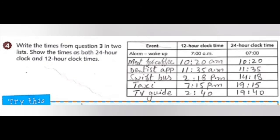Question number 4. In this exercise, we have three columns: one for event, one for 12-hour clock time, and one for 24-hour clock time. We will write down all events first as 12-hour clock time, then as 24-hour clock time. It is also book work.